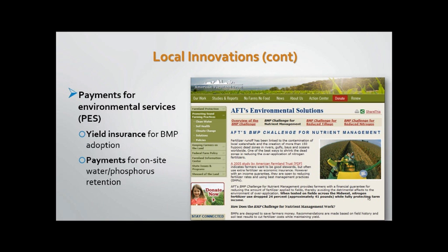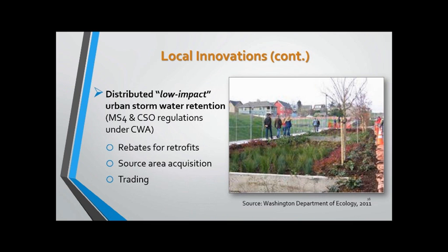In some instances locally, payments are being made for environmental services. The American Farmland Trust developed a system for ensuring yields on lands where water quality-oriented best management practices were being implemented. In Florida, there have been payments for on-site water and phosphorus retention beyond regulated limits. In urban areas, we're seeing a lot of interest in low-impact stormwater retention measures to keep water out of pipe sewer systems and reduce treatment requirements — bioswales, urban rain gardens, rain barrels are being supported in many cities, as well as acquiring areas for detention and recycling of water.